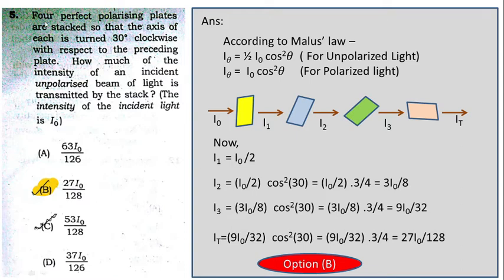Question 5: four perfect polarizing plates are stacked so that the axis of each is turned 30 degrees clockwise. So four polarizing plates are given, each inclined at 30 degrees with respect to the previous one — 30, 30, 30 — ultimately 90 degrees total. So the first and last plates are perpendicular to each other.